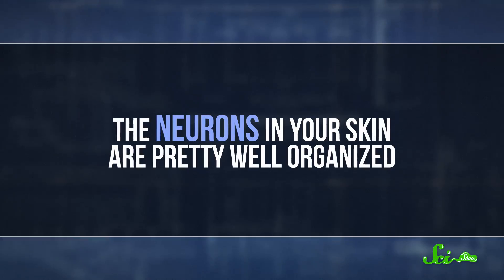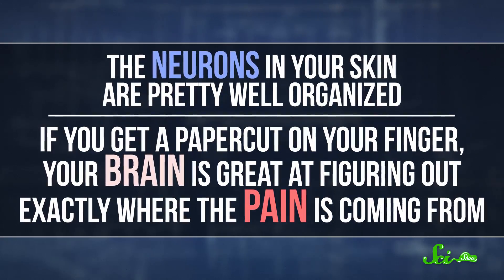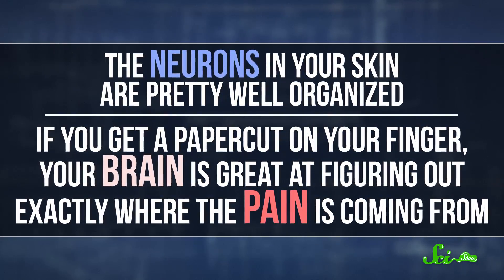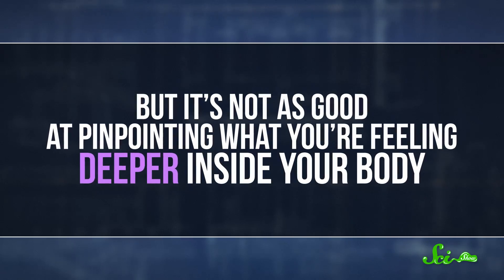Researchers still aren't totally sure how referred pain works, but they think it has to do with the way neurons are connected to each other. The neurons in your skin are pretty well organized. If, say, you get a paper cut on your finger, your brain is great at figuring out exactly where the pain is coming from. But it's not as good at pinpointing what you're feeling deeper inside your body.